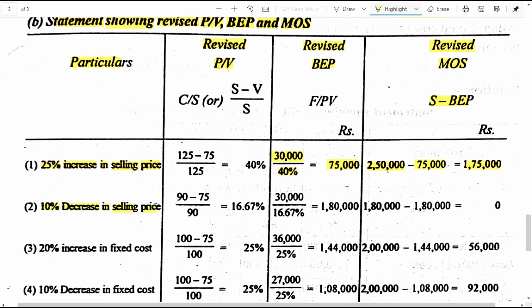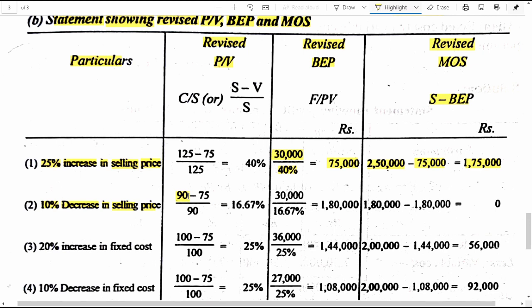Situation 2: 10 percent decrease in selling price. From 100 it comes down to 90. So 90 minus variable cost 75, divided by 90 into 100, gives 16.67 percent PVR. Revised BEP is 30,000 divided by 16.67 percent, giving 1 lakh 80,000 rupees. Revised actual sales is also 1 lakh 80,000 rupees (2 lakh reduced by 10 percent), so margin of safety in situation 2 is zero.